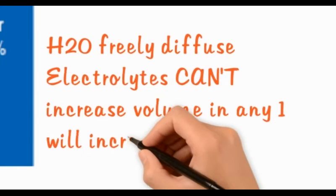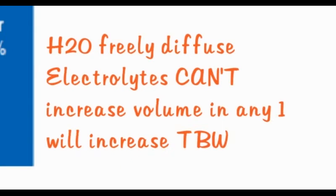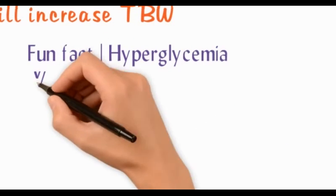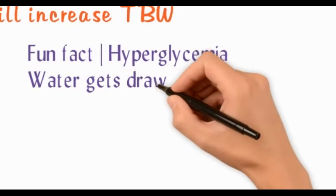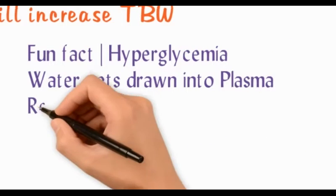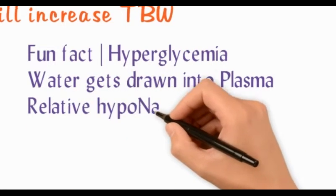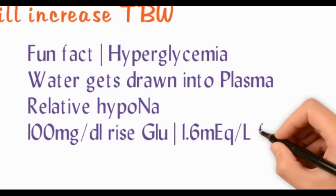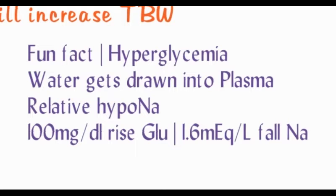In hyperglycemia, there is an increase of glucose in the plasma, therefore water gets drawn into the plasma and there is relative hyponatremia. For every 100 mg/dL rise of glucose above normal, there is a drop of sodium by 1.6 mEq/L.